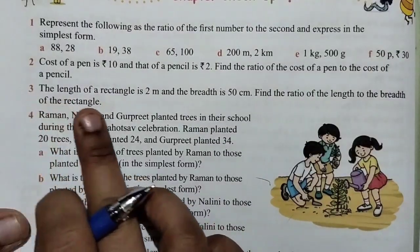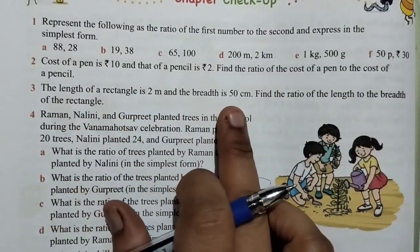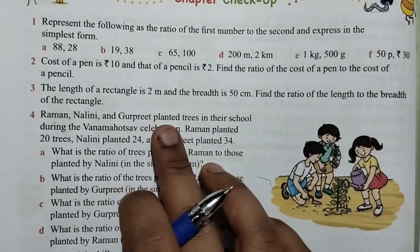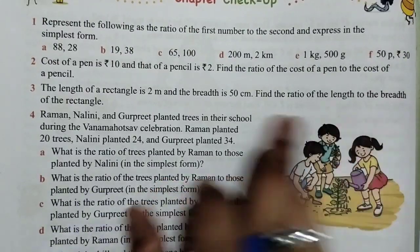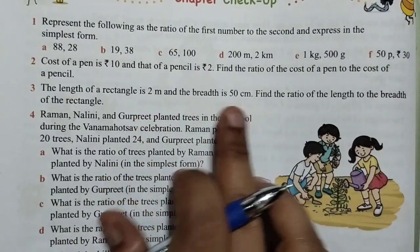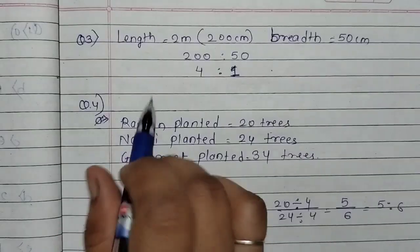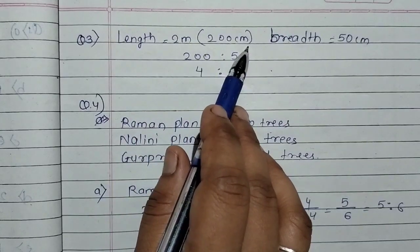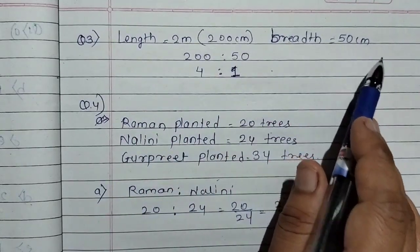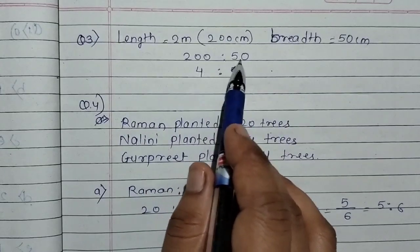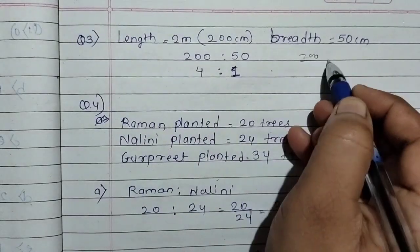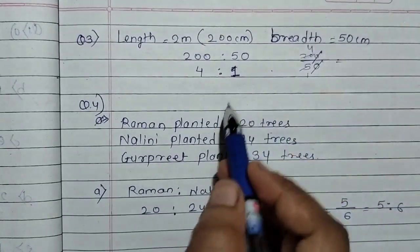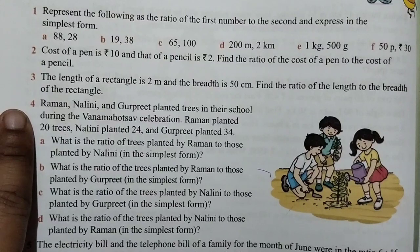Question number 3: the length of a rectangle is 2 meter and breadth is 50 centimeter. Find the ratio of the length to the breadth of the rectangle. The length of the rectangle is much more than the breadth. Length is 2 meters equals 200 cm and breadth is 50 cm. So the ratio is 200 upon 50, which is 200 to 50. 5 into 4 is 20, 5 into 10 is 50. So 4 is to 1 is the ratio.